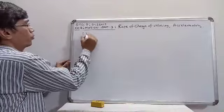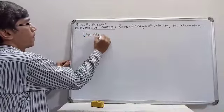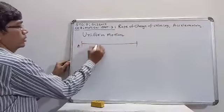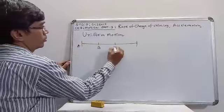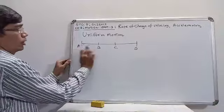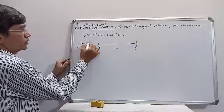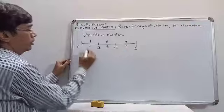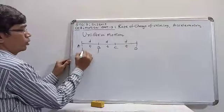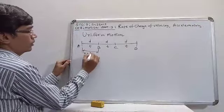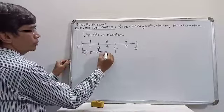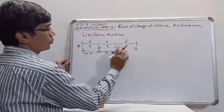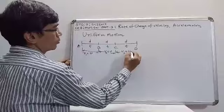Suppose we take this path with points A to B, B to C, C to D. During A to B, the object covers distance d in time t; similarly d and time t for each segment. So V1 during A to B equals V, V2 during B to C equals V, and V3 during C to D also equals V.